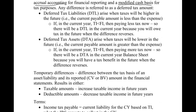Let's define deferred tax liabilities. The keyword is liability, and it's deferred — meaning something will happen in the future. A DTL arises when taxes will be higher in the future, meaning the current payable amount is less than the expense. So if taxable income is less than financial income, we are paying less tax now, and we'll have a DTL because in the future we will pay more when this difference reverses out.